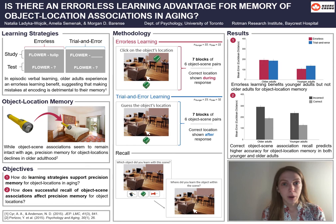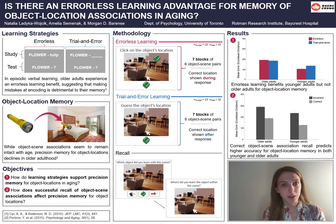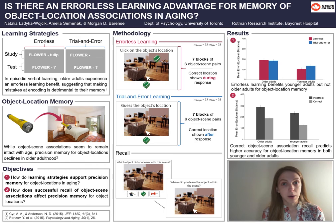To do so, we conducted an online memory task via Gorilla, collected on MTurk. Participants were assigned to the errorless learning condition or the trial and error condition. In the errorless learning condition, participants learned 42 object-scene pairs in seven blocks and learned the object location in each trial by clicking on the object embedded within the scene. Critically, participants in this condition saw the correct location during the entire trial. Participants in the trial and error learning condition also learned 42 object-scene pairs across seven blocks, but first had to make a guess as to the target object's location within the scene by clicking within the scene image. We leveraged a function in Gorilla to have participants click in the scene to indicate where they thought the object was. After they had made their response, participants in the trial and error condition were then shown the correct location as feedback for each trial.